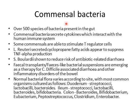Last but not least, commensal bacteria — the usual gut flora — also play an important role in GIT immunity. We have over 500 species of bacteria present in the gut. Some of these have adapted to the human body and secrete cytokines that interact with our human immune system, even stimulating and regulating our T cells. For example, Lactobacillus reuteri, which is present in Probiflora probiotics, secretes cyclopropane fatty acids, which appear to suppress the production of tumor necrosis factor alpha, a pro-inflammatory cytokine.